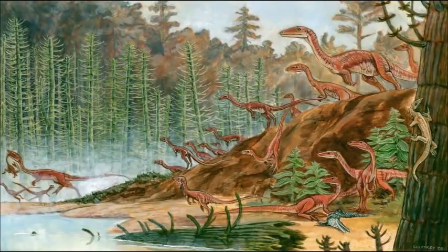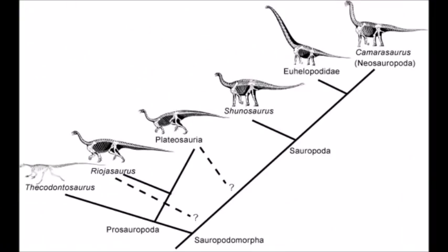Hello everyone. In the last video we walked through the phylogeny of dinosaur ancestors and the earliest dinosaurs. In this and the later videos of this series we will be looking at specific lineages of dinosaurs, starting with the sauropodomorphs, from the small to the gigantic titans of the ancient world. So, let's jump right in.